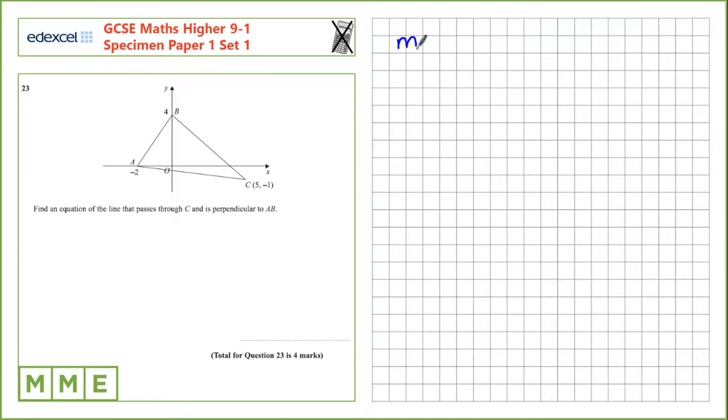So we can calculate that by finding the gradient as Y2 minus Y1 over X2 minus X1. In this case for B, the coordinates of B we know are 0, 4, and the coordinates of A are minus 2, 0. So we just need to be consistent with these two numberings, so we'll call X2 and Y2 B, and X1 and Y1 for A.